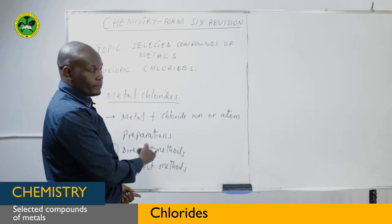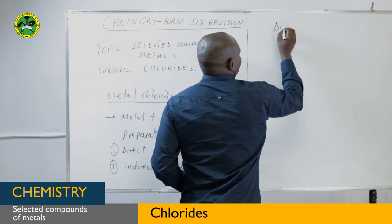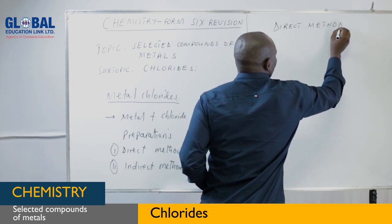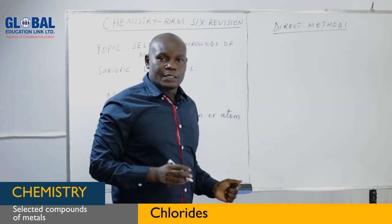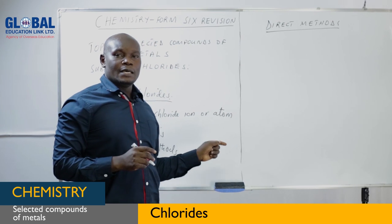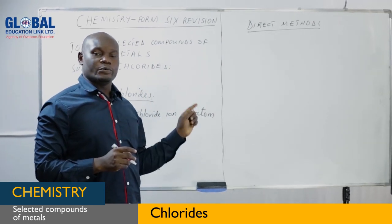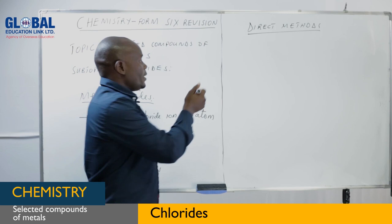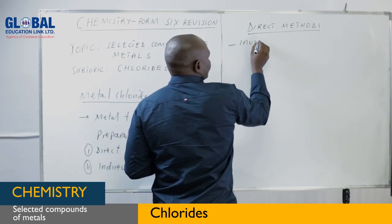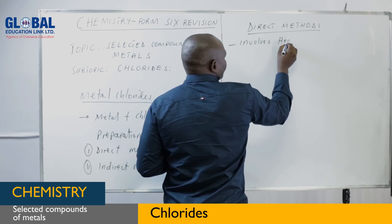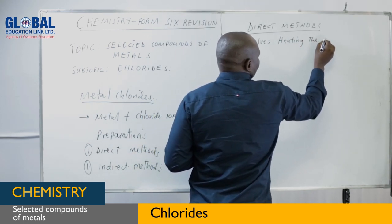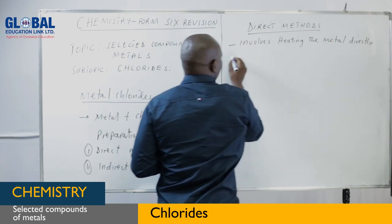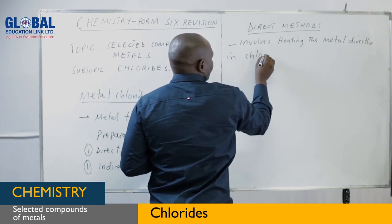The direct method involves heating a metal directly in chlorine gas — that is what we call the direct method. So you combine the metal and the chlorine directly. It involves heating the metal directly in chlorine gas.